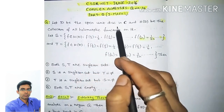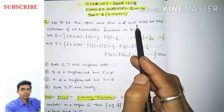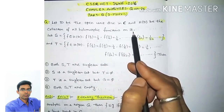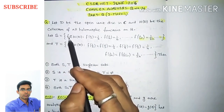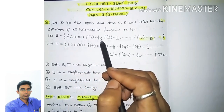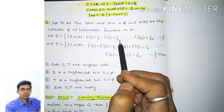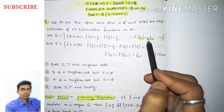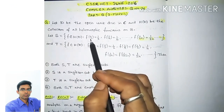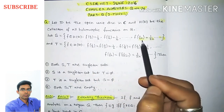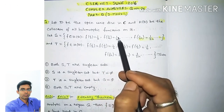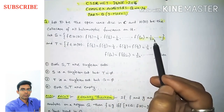The question is: let capital D be the open unit disk in complex plane C, and H(D) be the collection of all holomorphic functions on it. Let S be the set of all f belonging to H(D) such that f(1/2) = 1/2, f(1/4) = 1/4, and in general f(1/2n) = 1/2n, so whenever the denominator is an even number 2, 4, ..., 2n, f is defined to be the identity.